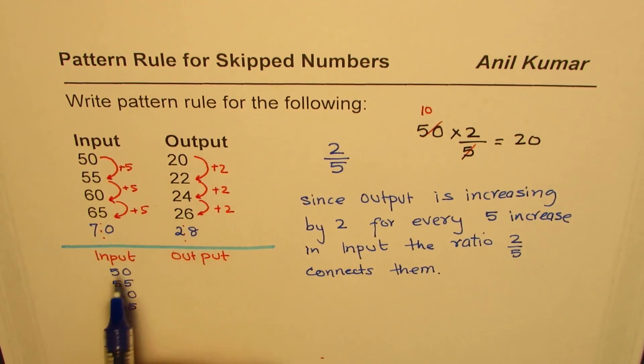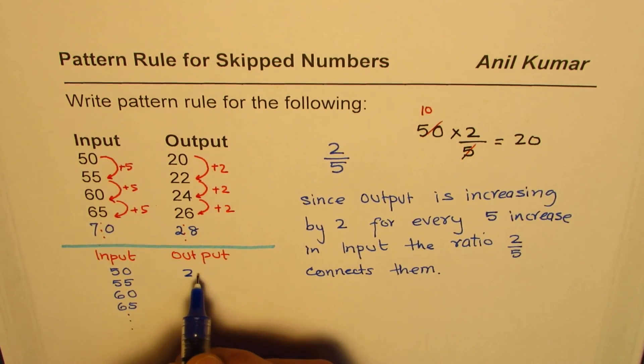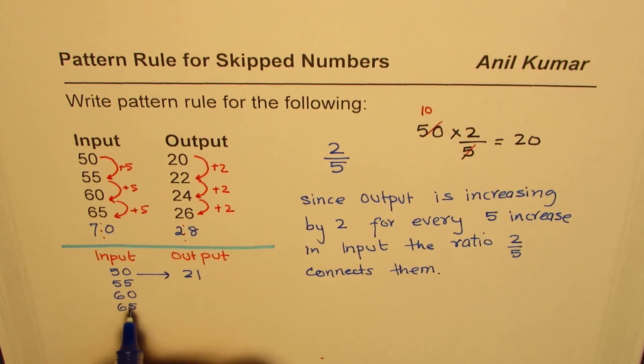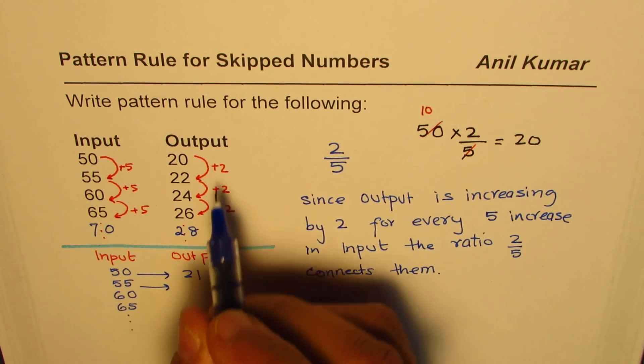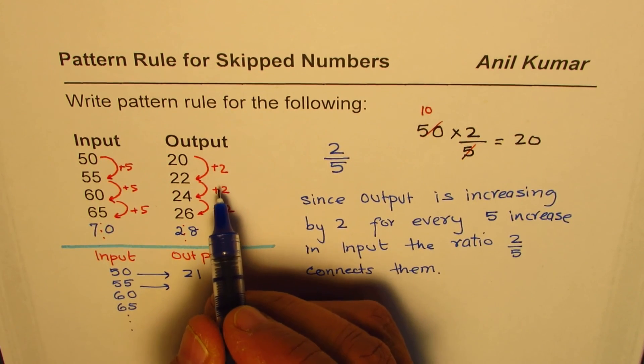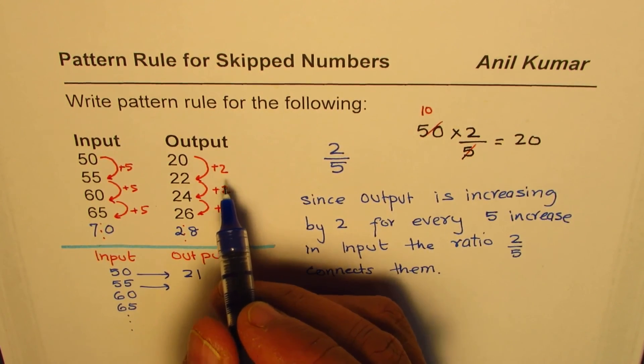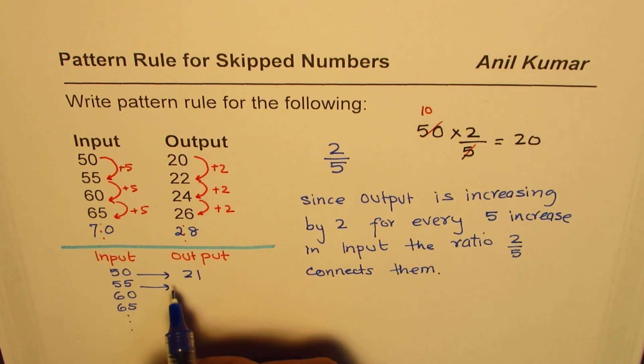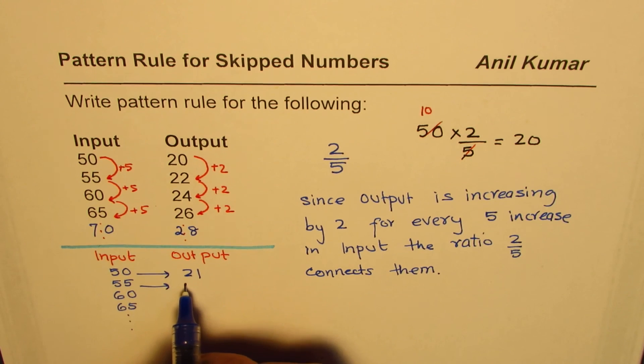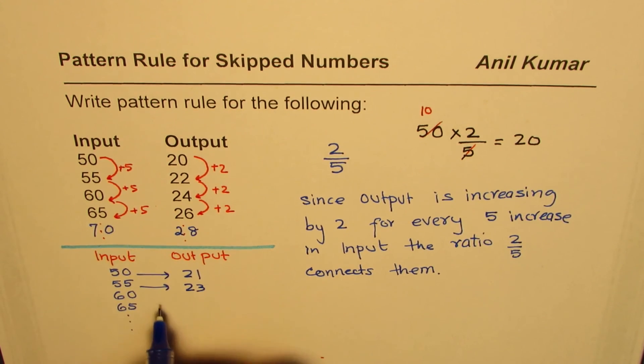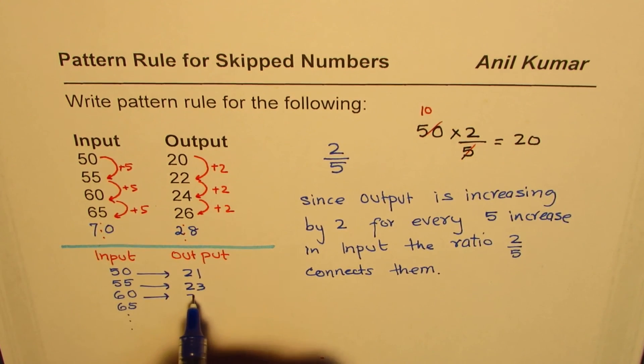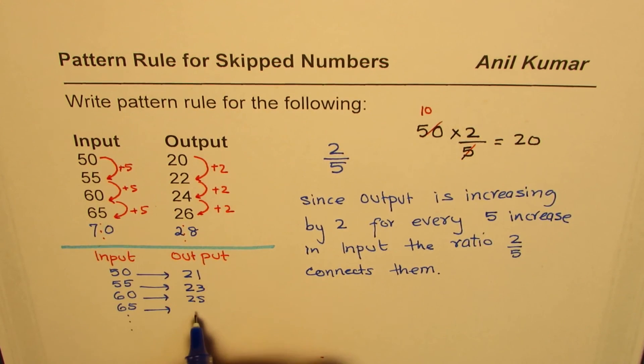But I'm changing the output. Instead of writing 20 for 50, let me write the number 21. So for 50 let's say we get 21. For 55 we want to still increase by the same amount, so we'll increase by 2. We get 23 here. For 60 we get 25. For 65, increase by 2 will give us 27, and so on.